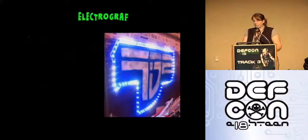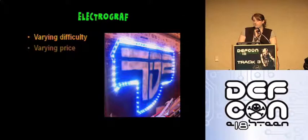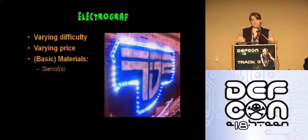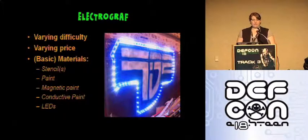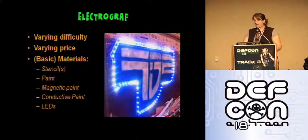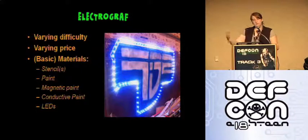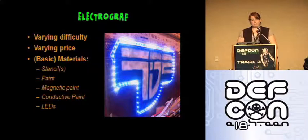Next, we have the electrograph. It can be as easy or as difficult as you want to make it, and likewise as inexpensive or expensive as you wish. The base materials are pretty simple: conductive paint, magnetic paint, regular and/or spray paints, stencils in case you're not comfortable free-handing, LEDs, and batteries. From there, you can add various components like microprocessors, photoresistors so that the LEDs only come on at night, or even a proximity sensor so that it lights up based on how close someone is to the art.